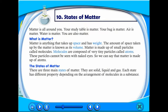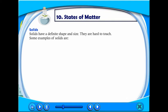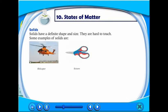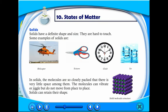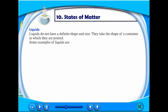Solids have a definite shape and size. They are hard to touch. Some examples of solids are helicopter, scissors, clock, ice. In solids, the molecules are so closely packed that there is very little space among them. The molecules can vibrate or jiggle but do not move from place to place. Solids can retain their shape.